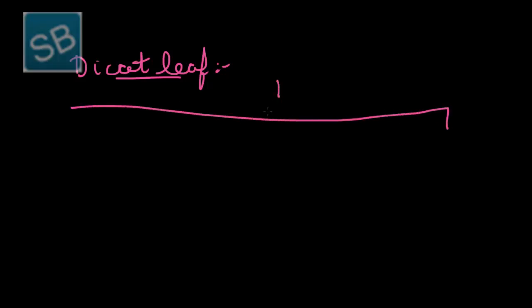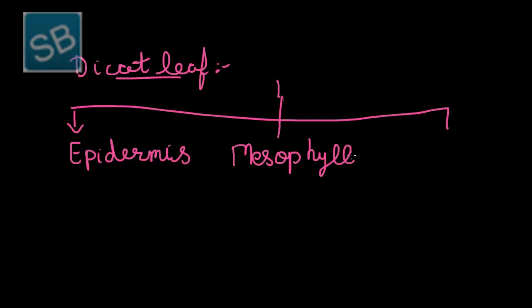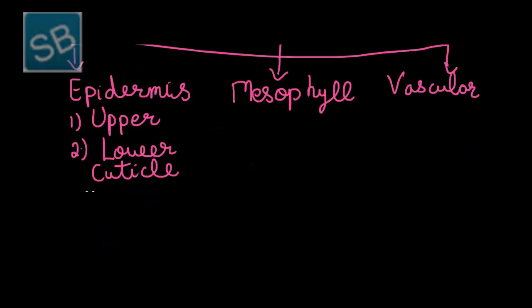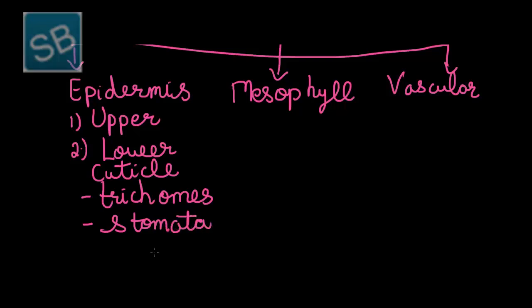Thus the dicot leaf mainly possesses three important features. First is epidermis, second is mesophyll, and third is the vascular region. The epidermis consists of two important regions: upper epidermis and lower epidermis, covered with cuticles and is multilayered. It possesses trichomes, that is hair-like projections, and stomata. The number of stomata in the lower epidermis is more as compared to that of the upper one.